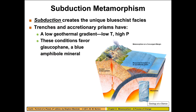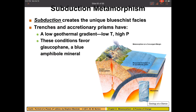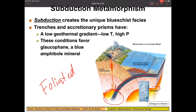Subduction metamorphism involves an ocean plate subducting beneath another plate. At the lower levels you experience temperature, but before that you experience very high amounts of pressure. This definitely produces foliated rocks — specifically, its own special brand of foliated rocks called blueschist.